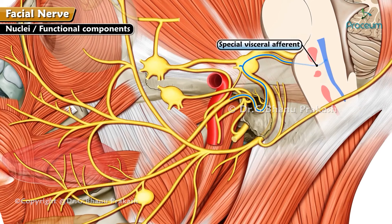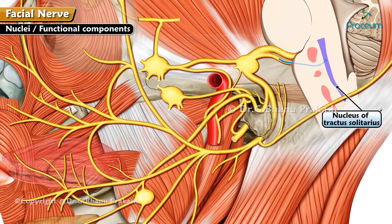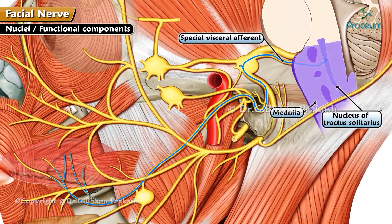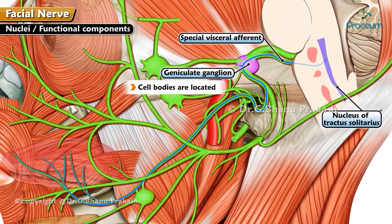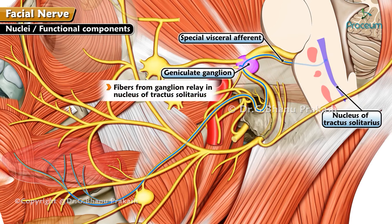Special visceral afferent: nucleus of tractus solitaris. These fibers arise from the nucleus of tractus solitaris, which is located in the upper part of the medulla and is concerned with taste sensation from the anterior two-thirds of the tongue, except the circumvallate papillae. The cell bodies are located in the geniculate ganglion of the facial nerve, and the fibers from the ganglion relay in the nucleus of tractus solitaris.